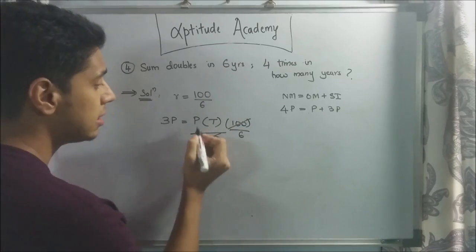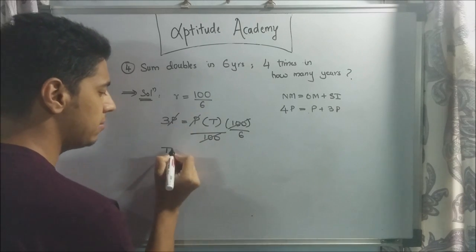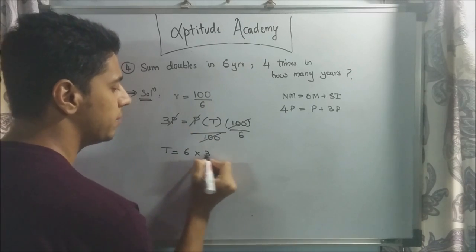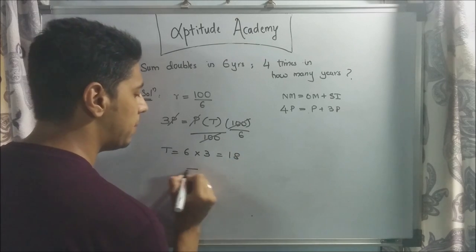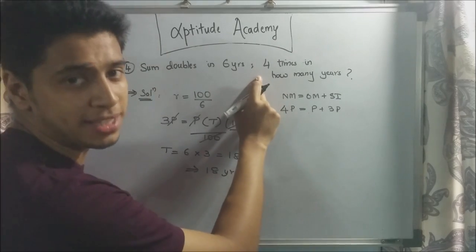P and P gets cancelled. So time is equal to 6 into 3. Time is equal to 6 into 3 is equal to 18. Implies, after 18 years, your sum will become 4 times itself.